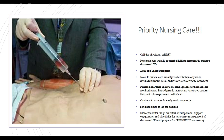Continue to monitor hemodynamically and send the specimen to lab for cultures to identify the causative agent or root cause, which allows proper treatment and helps prevent recurrence — a possible complication. Closely monitor the patient for return of tamponade, support oxygenation, give fluids for temporary management of decreased cardiac output, and prepare for emergency sternotomy if tamponade recurs.